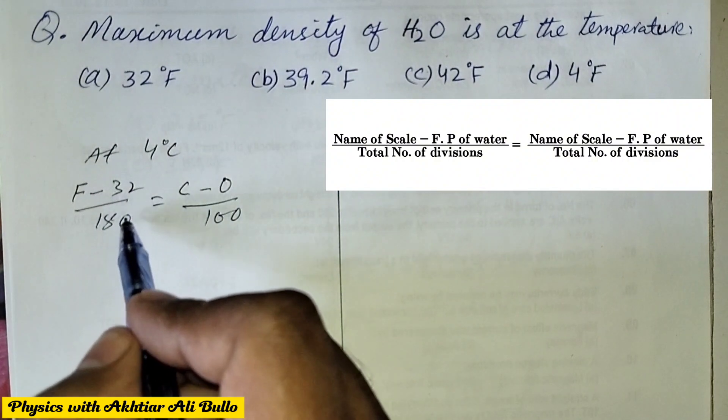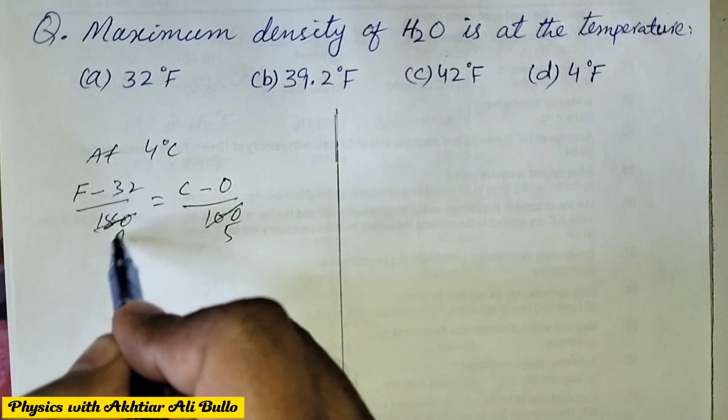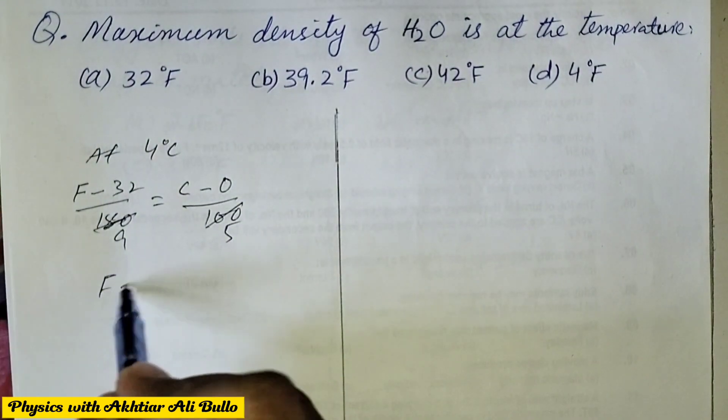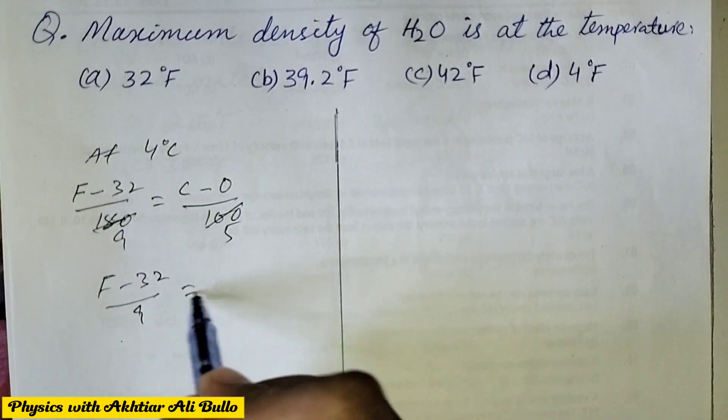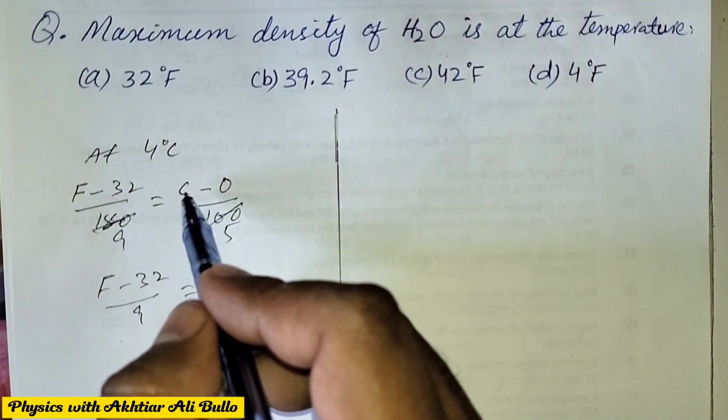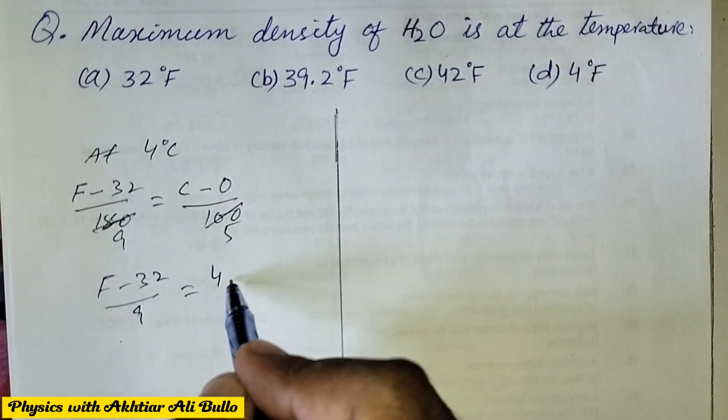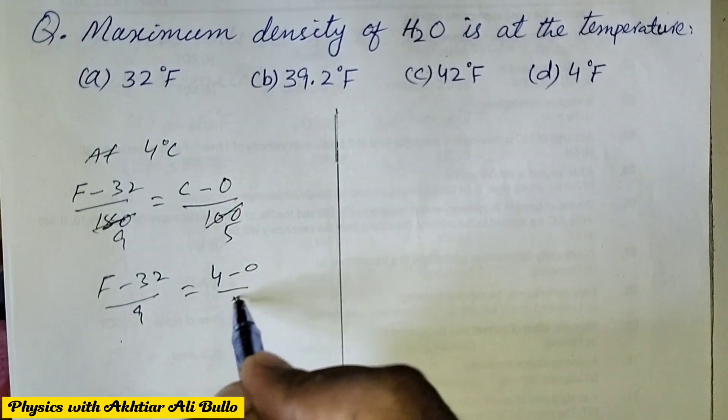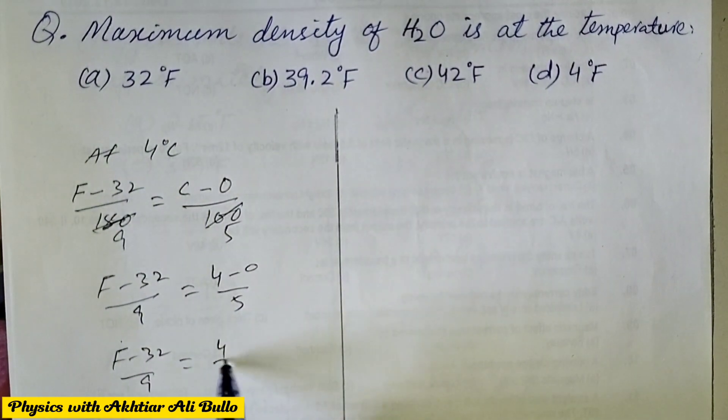The table of 20 on 100 is 5 times and 180 is 9 times. So F minus 32 upon 9 is equal to the temperature in Celsius is obtained as 4, 4 minus 0 upon 5.